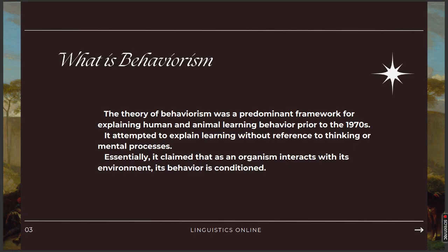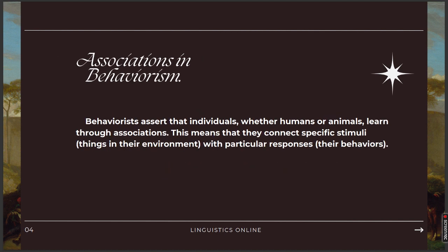The theory of behaviorism was a predominant framework for explaining human and animal learning behavior prior to the 1970s. It attempted to explain learning without reference to thinking or mental processes. The behaviorist psychologists Ivan Pavlov and B.F. Skinner developed their theories while carrying out a series of experiments on animals. They observed that rats and birds could perform various tasks by encouraging habit forming. Researchers rewarded desirable behavior — this was known as positive reinforcement — while undesirable behavior was punished or simply not rewarded. For them, learning is based on conditioning and habit formation.